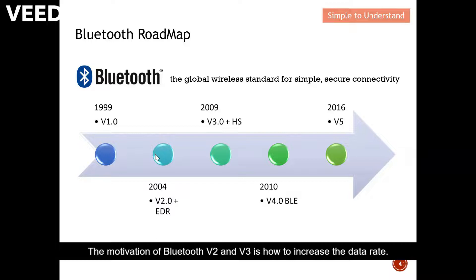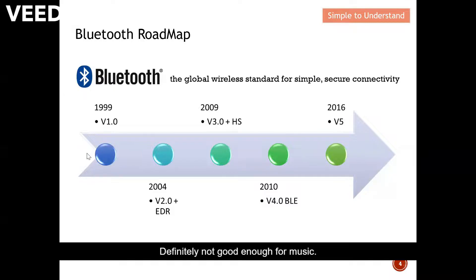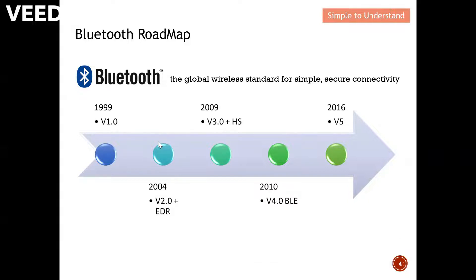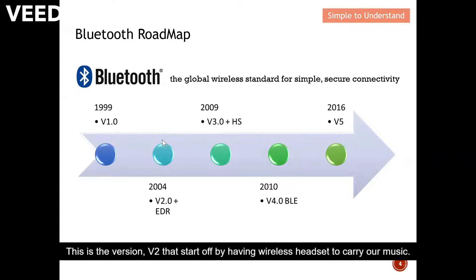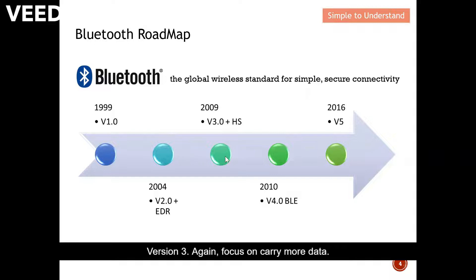The motivation for Bluetooth versions 2 and 3 was to increase the data rate. In version 1, the data rate was only good enough to carry voice — definitely not good enough for music. Version 2 increased the data rate and became good enough to carry music, marking the start of wireless headsets. Version 3 again focused on carrying even more data.